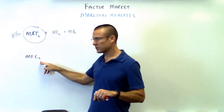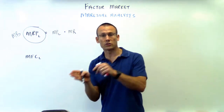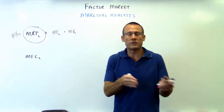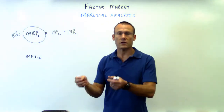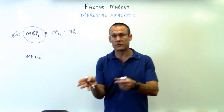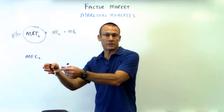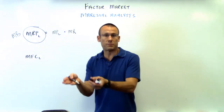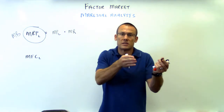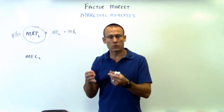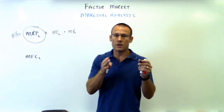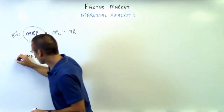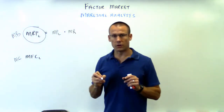Marginal factor cost of labor — this is just the marginal cost of labor. The only reason they have an F here is when you see MC generally, you think of the product market. So they've put this F in here to remind you this isn't the product market, this is the factor market. It's basically just the marginal cost of labor — the additional cost of hiring one more laborer.